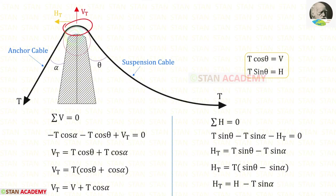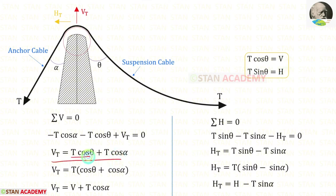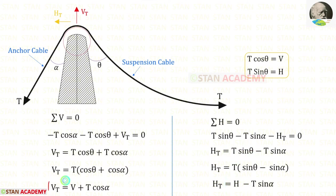In the top of the tower, T cos theta is the vertical component — it should be the vertical reaction due to the loads. T sin theta is the horizontal thrust H. So in this equation, instead of T sin theta we can apply H. These are the alternative expressions for Vt and Ht.